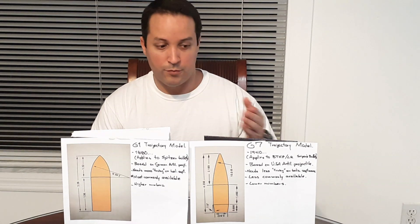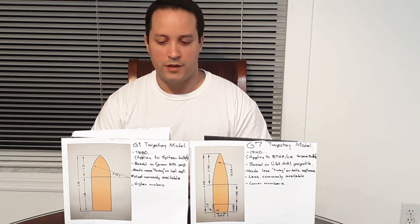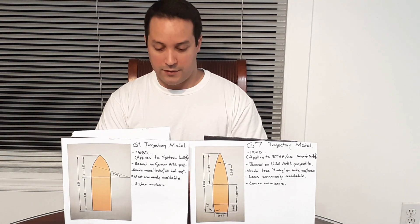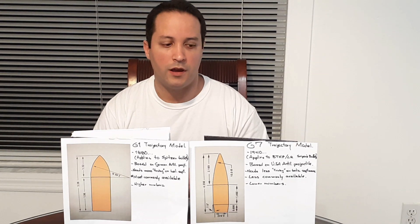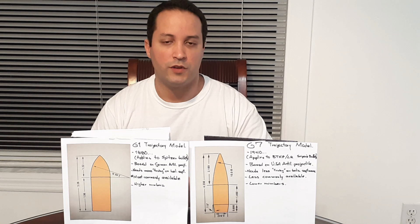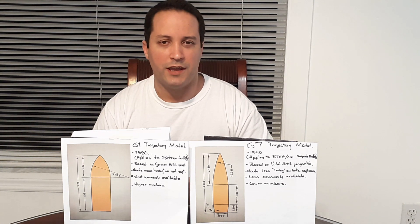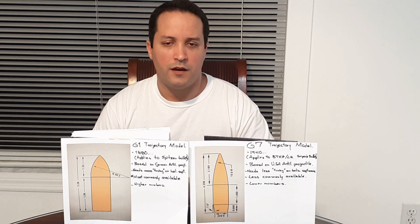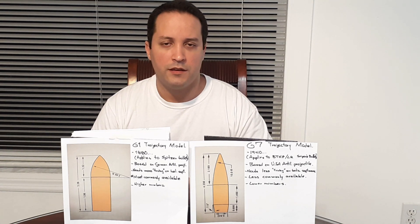There are two general trajectory models. In front of me I have the G1 and the G7. They were both created in different times. G1 has lower numbers and was created around 1880, while G7 is more modern, created in 1940.